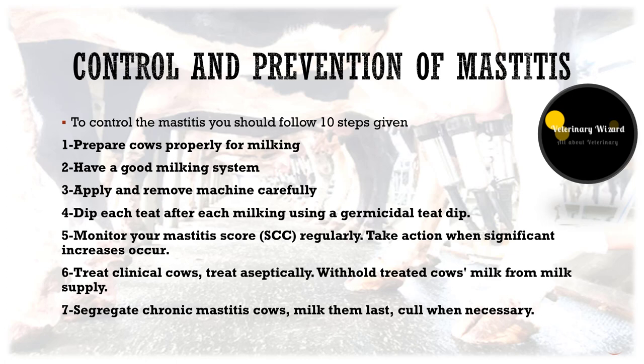Fourth, dip each teat after each milking using a germicidal teat dip. Post-dips seal the teat ends temporarily for six to eight hours and are essential for long-term mastitis control. Fifth, monitor your somatic cell count regularly and take action when increases occur. Sixth, treat clinical cows promptly.